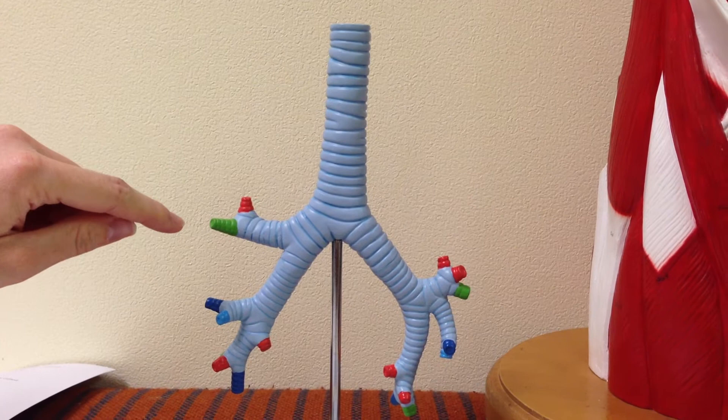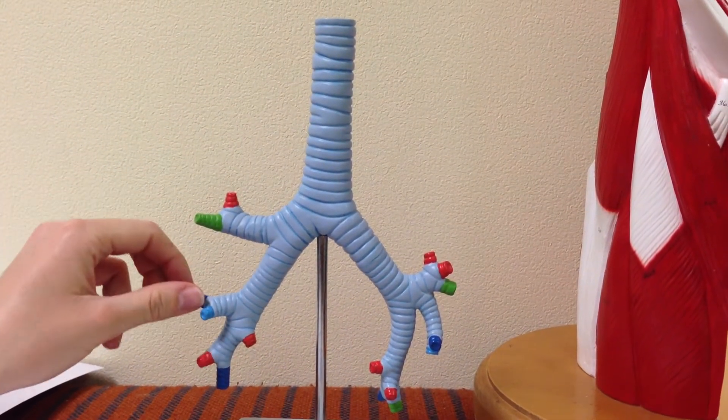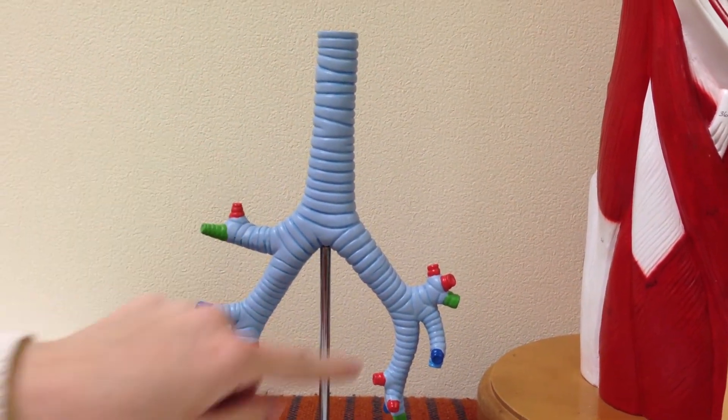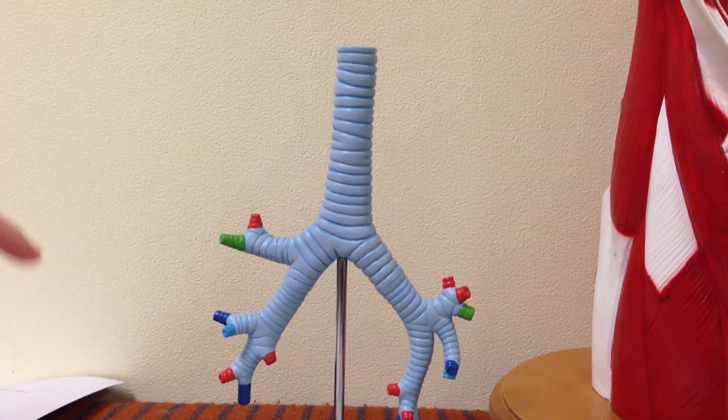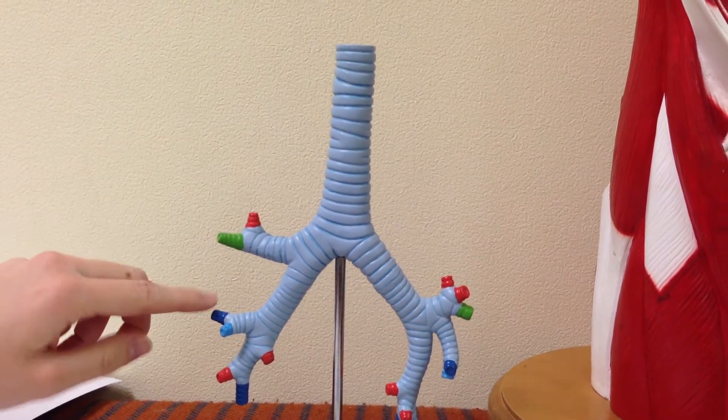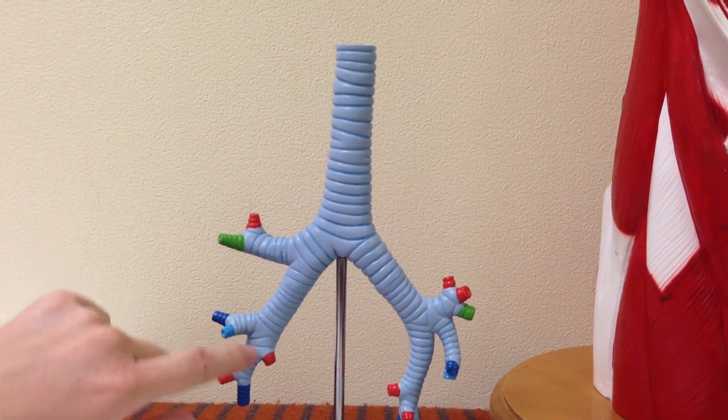The right is supposed to have three, it doesn't, on this model it only has two, and then on the left side it's supposed to only have two. And then the tertiary bronchi are like these little colored things right here.